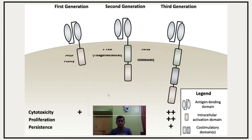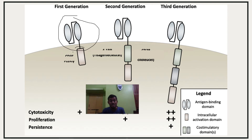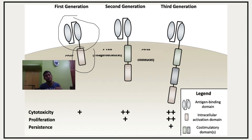CAR T cells reproduce across generations — first, second, and third generation — becoming more numerous and effective. Each generation includes the antigen binding domain at the top, followed by the intracellular activation domain and the co-stimulatory domain. As the generations progress, cytotoxicity, proliferation, and persistence all increase.